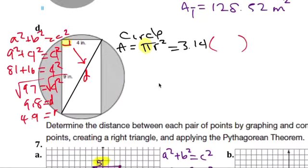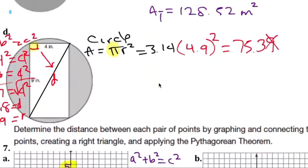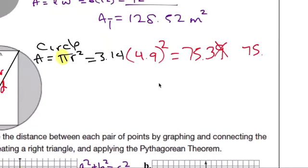3.14 times 4.9 times 4.9. You get 75.39. Because it's a 9 here, it turns into 75.4. Round it to nearest 10th at the end.